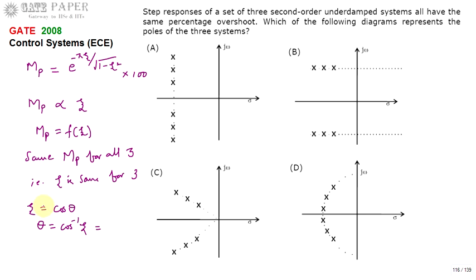Since zeta is the same for all three systems, theta must also be the same for all three systems. So all three underdamped second-order systems should have the same theta value whenever they have the same percentage overshoot. Theta is the angle made by the system's poles with respect to the negative real axis.